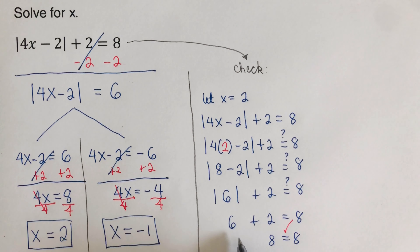Step two: break up into two components — positive a and negative a. The positive component and negative component are written out, and we solve for x, getting x = 3 and x = 1.